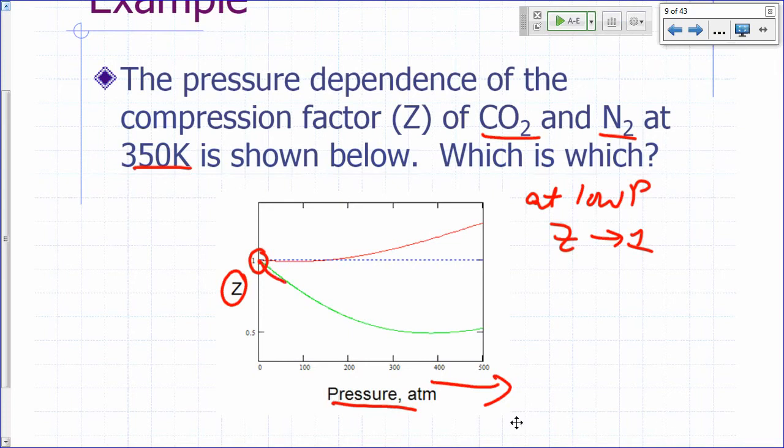So, as the pressure increases, it dips below 1. This one dips a lot. Eventually, that's going to go back up. This one dips a little bit and then it goes back up. So, eventually, that Z exceeds 1 at very high pressure.